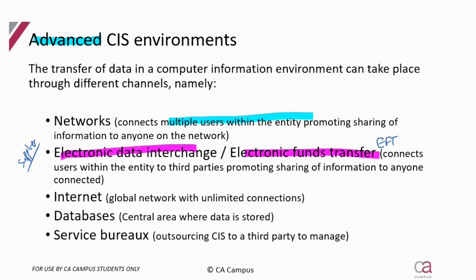The internet is like a network but it is global with unlimited connections, which are obviously limited by your access controls, usernames and passwords. But ultimately, everyone is using the same mechanism to connect - the internet. Having unlimited connections and a global network, there are going to be more risks here than just a network within a company, because there's huge potential for hackers to get involved and gain access to information.